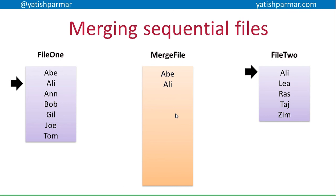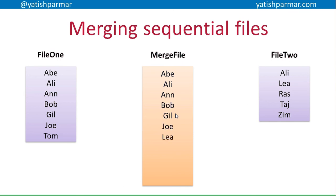I need to have my third assumption in place here, where I have decided what I'm going to do with duplicate data items. Here, I'm assuming that I'm just going to discard one of the two. So I've copied Ali over, then I update my pointers down, go and compare the next two items. It's smaller than Leah, therefore Abe gets copied over. I move my pointer along and copy Bob, Jill, Joe, and so on down the list until I reach end of file in both data files.